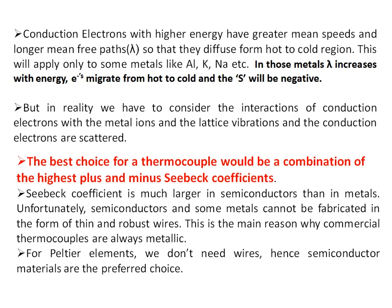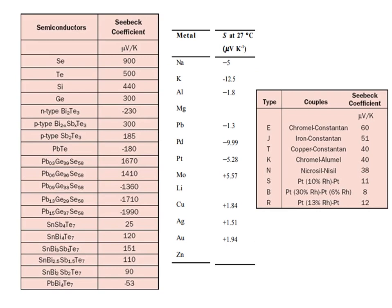The best choice for a thermocouple is the combination of the highest positive and the highest negative Seebeck coefficient. The Seebeck coefficient is much larger in semiconductors than in metals, but semiconductors and some metals cannot be fabricated into thin, robust wires needed for temperature measurement. This is the main reason why commercial thermocouples are always metallic. For the Peltier effect, wires are not needed, so semiconductor materials are the preferred choice, which will be discussed in the next video. A chart showing the Seebeck coefficients for semiconductors and metals, along with different thermocouple types, is also presented.